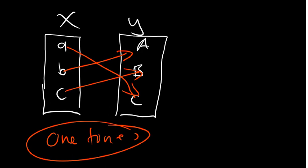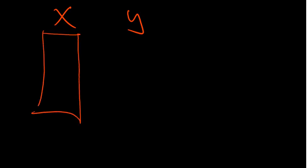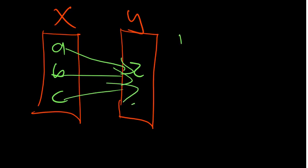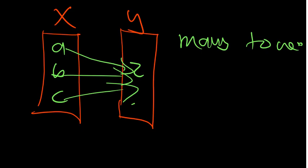There's also what we call many-to-one. In this mapping, elements a, b, c all map to a single value z. Many values of x are relating to one value of y — that's why we call it many-to-one.